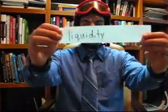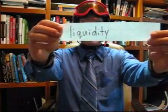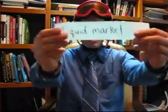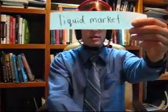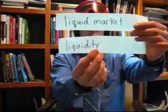If you've ever watched financial television, you will know that they sometimes talk about liquidity. Liquidity means how easy it is to buy and sell. If we have a liquid market, then we have good liquidity. Liquid is like water — it flows. So if the market flows, it means it's easy to buy and sell.